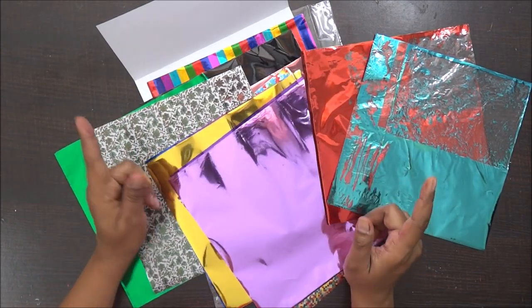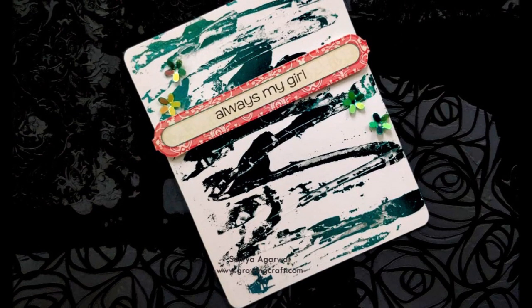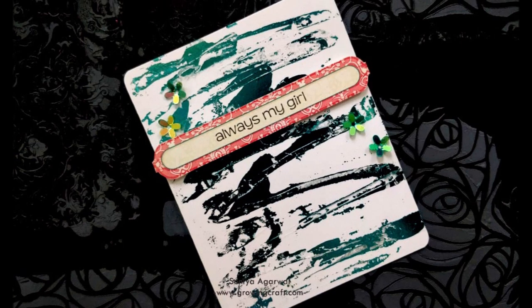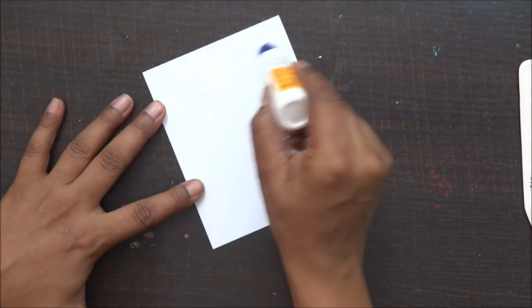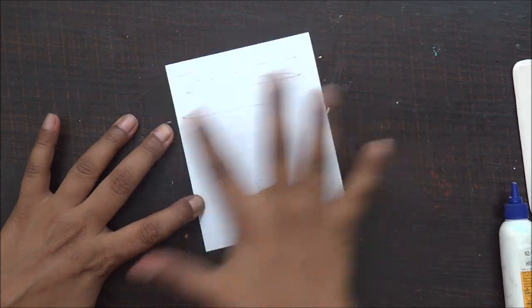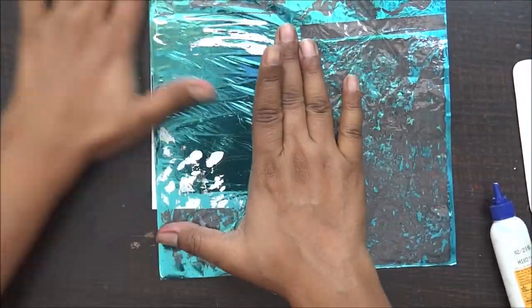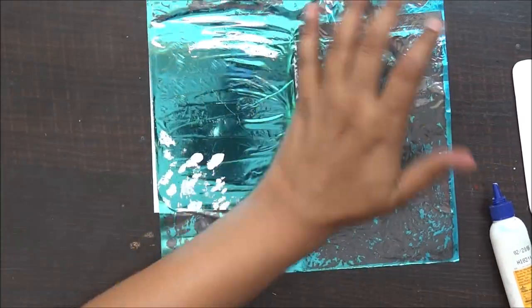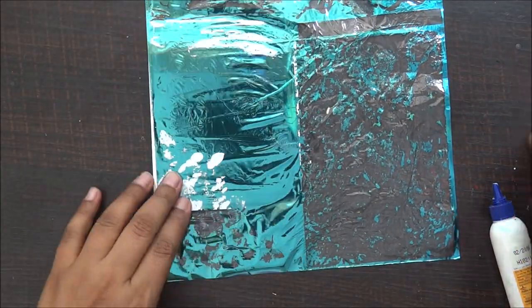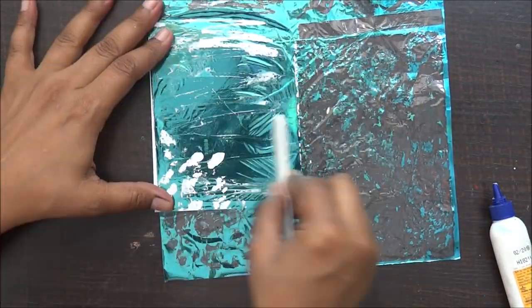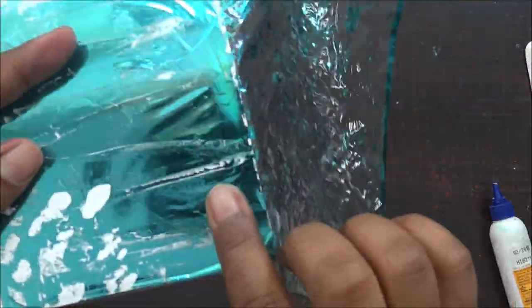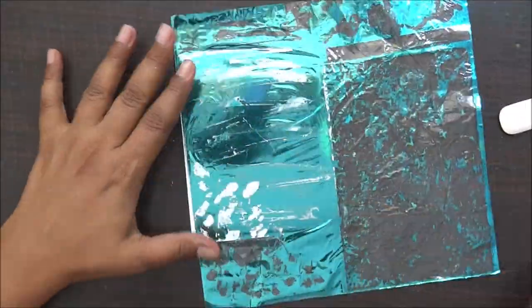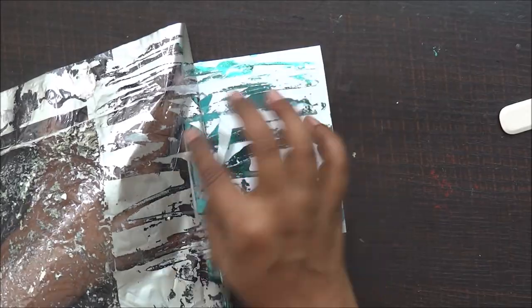The easiest way is to use it with any adhesive. So here I have created this tag. First on a cardstock I'm going to smudge my adhesive, then stick my foil on it and press it properly so that it sticks to my adhesive. Then I'm going to just peel it off and it's done. So this is how it looks when your foil sheet is attached to your layout.